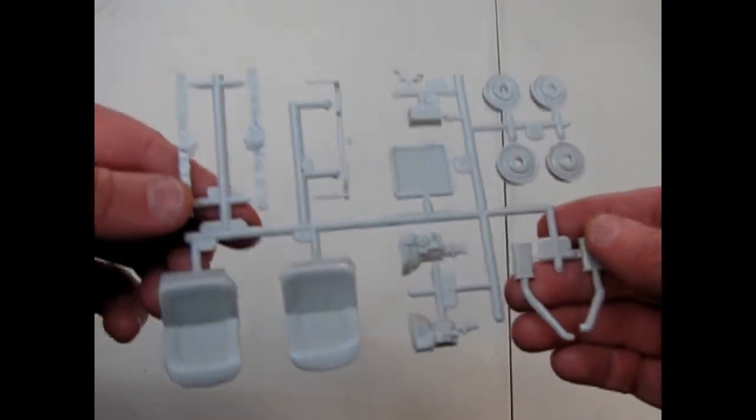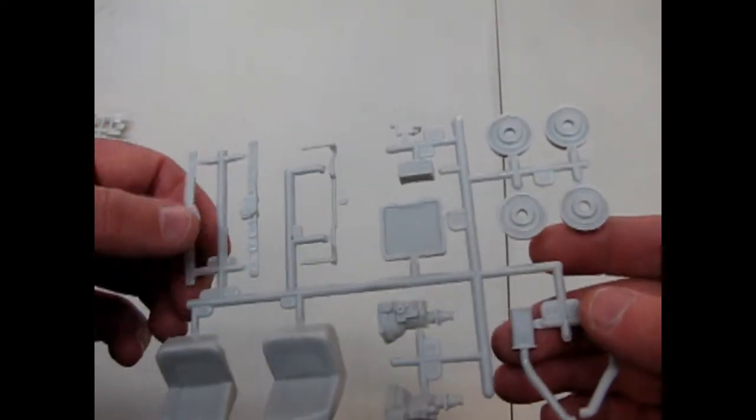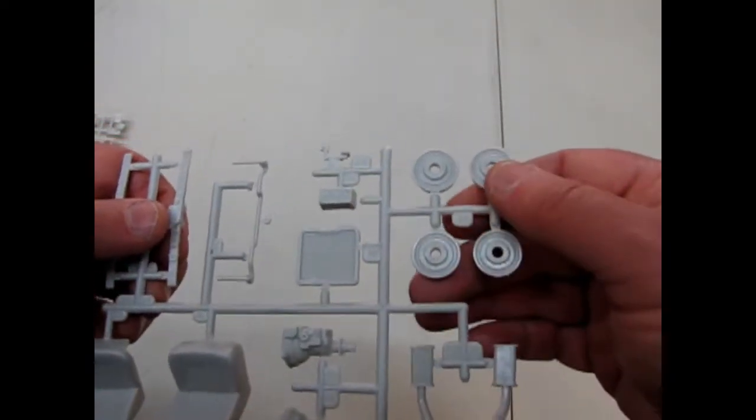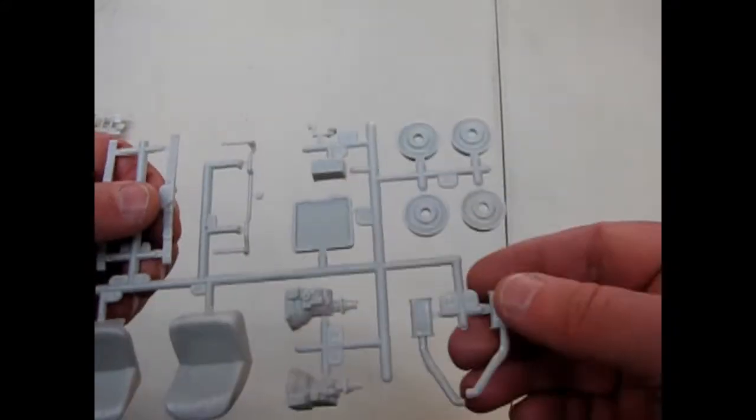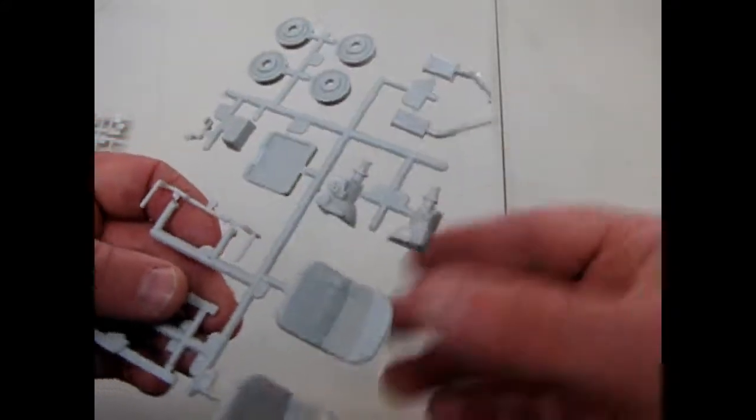And here we have the transmission and our seats, the springs and our wheel backs and radiator battery, that sort of thing. Some very nice detail on it.